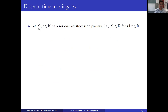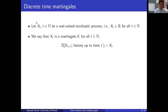Let x_t be a discrete time process that takes values in the real numbers. So for any given t, x_t is going to take a value in the real numbers. We say that such a stochastic process is a martingale if the following is true: if I tell you everything that happened up to time t, including the value of x_t, then the expected value of the state at time t plus 1 is equal to x_t.